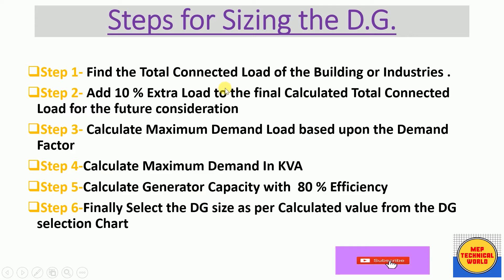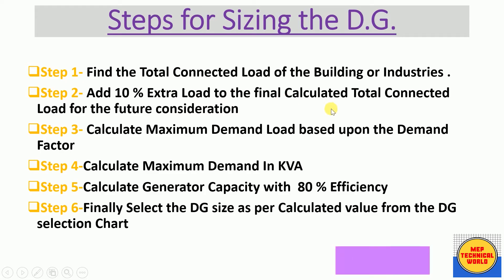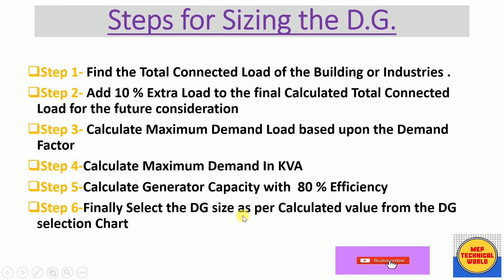We have some steps for sizing the diesel generator. Step 1: find the total connected load of the building or industry. Step 2: add 10% extra load to the final calculated total connected load for future consideration. Step 3: calculate maximum demand load based upon the demand factor. Step 4: calculate maximum demand in kVA. Step 5: calculate generator capacity with 80% efficiency. Step 6: select the DG size as per the calculated value from the DG selection chart. Now let's discuss each step one by one.